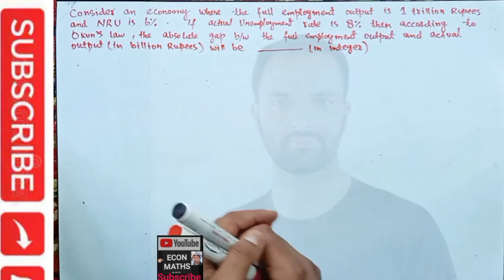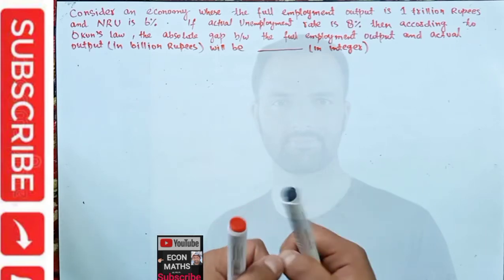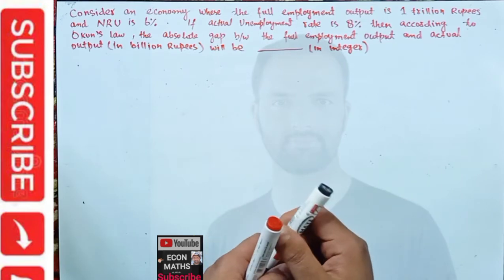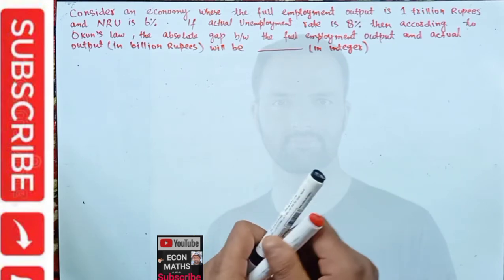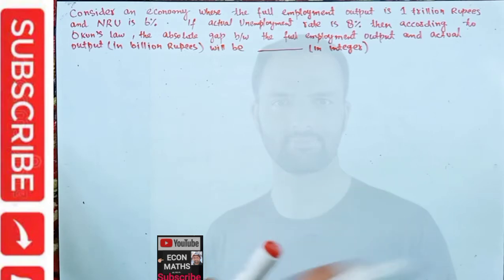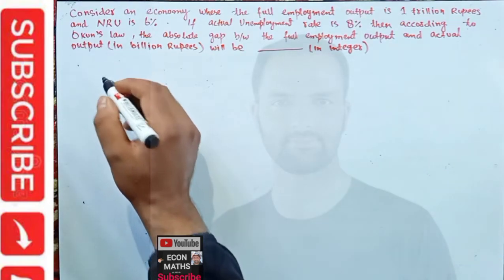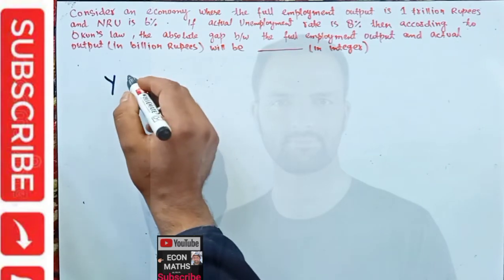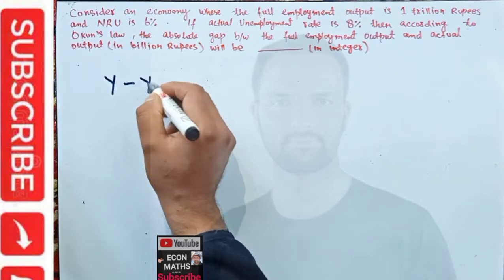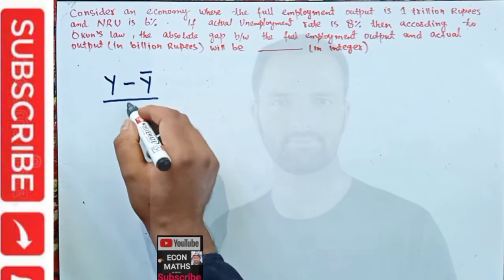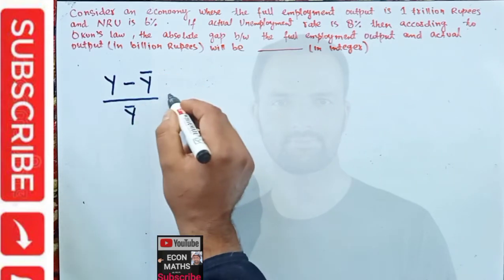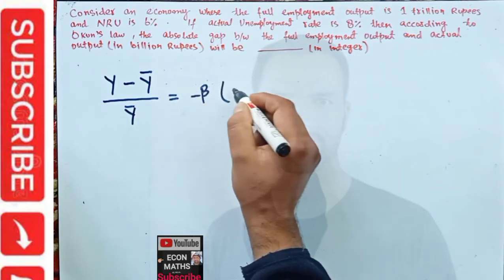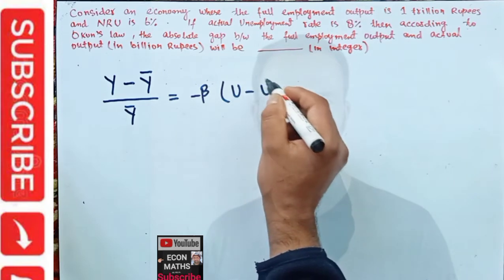So what is Okun's Law? Okun's Law is simply the relationship between an economy's unemployment rate and its GDP or GNP. The relationship is given by: (y minus y-hat) divided by y-hat is equal to minus beta times (u minus u-hat).